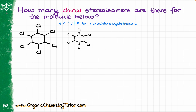Then, once we get every new stereoisomer, we are going to ask ourselves if the molecule is chiral or not. Well, is this molecule chiral? No, this molecule is not chiral. We have a ton of planes of symmetry here, so that is an example of an achiral molecule because it will be superimposing with its own mirror image.